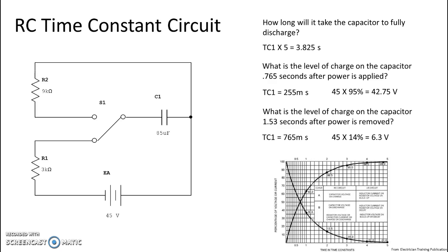After power is removed, we look at our graph and use the downswing because that is our discharge curve. At time constant two, we round up to 14 percent. We take our applied voltage and multiply by 14 percent, and we get a voltage on the capacitor of 6.3 volts at 1.53 seconds.